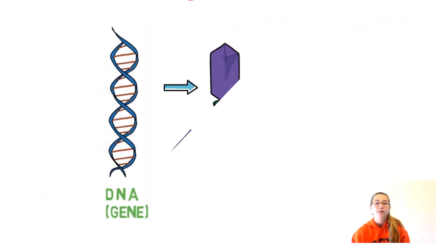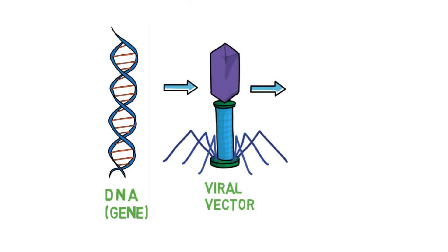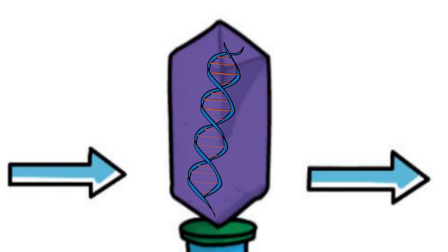As it turns out, Mother Nature has actually solved this problem for us. Naturally occurring viruses infect cells by incorporating their viral genes into the cell's nuclei. In the lab, it's possible to replace the harmful viral genetic material with our isolated therapeutic gene. Then the virus can be used as a delivery system to get our gene into the cell's nuclei.